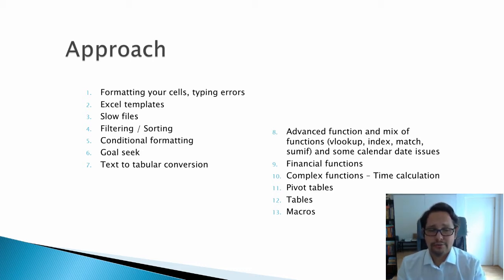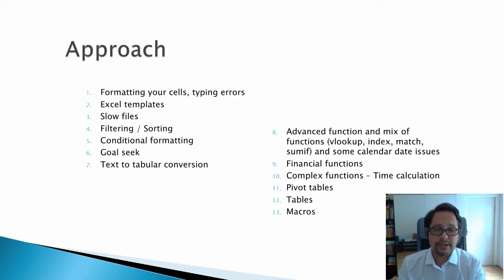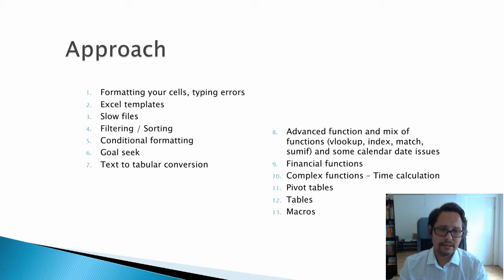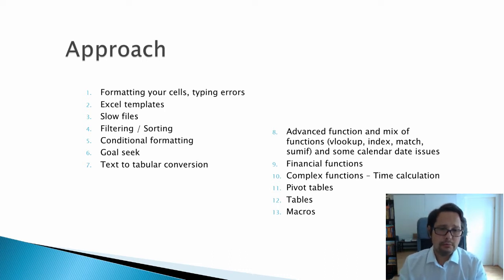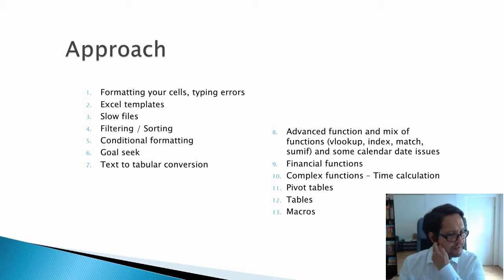The idea is to show you that things can get very complex in Excel — which is why I have said at some point that Excel has programming-like functionalities and can work almost as a programming language. Then we are going to talk about pivot tables. You start from lists of raw data and use pivot tables to aggregate entries and present the data across two or more dimensions.